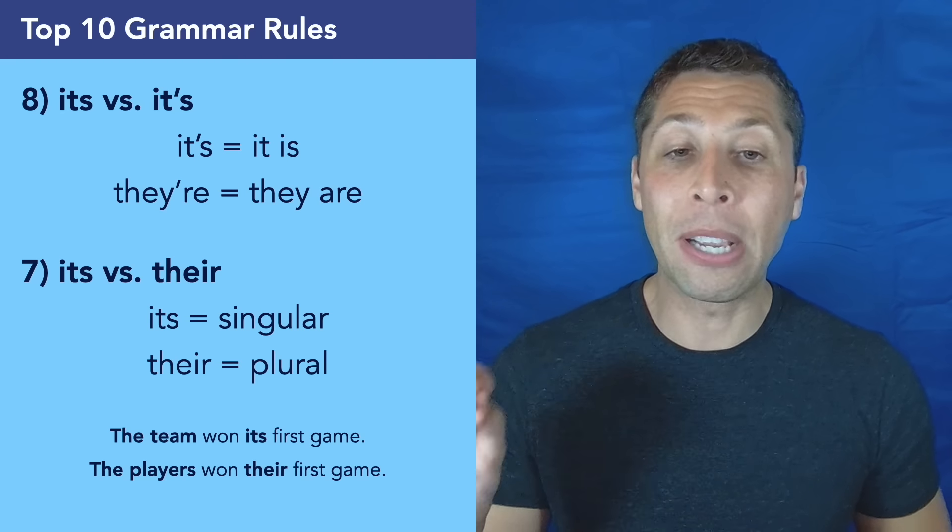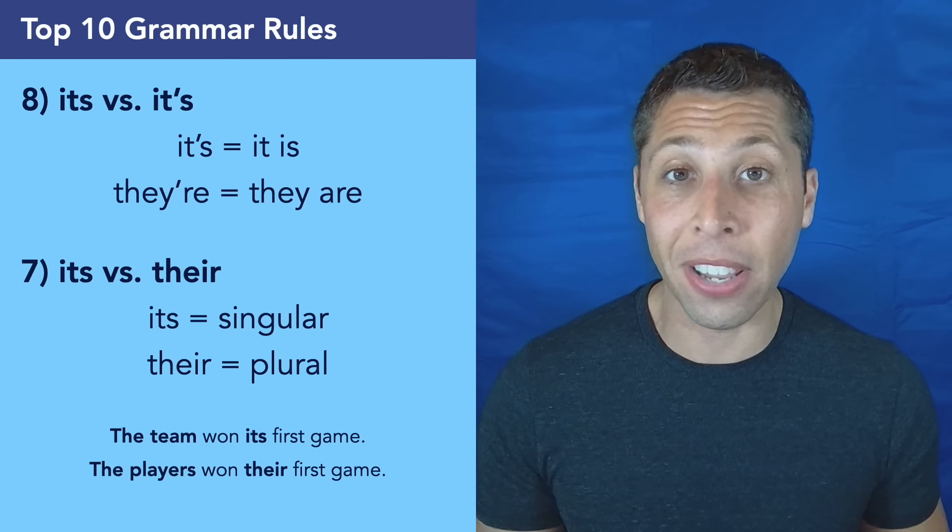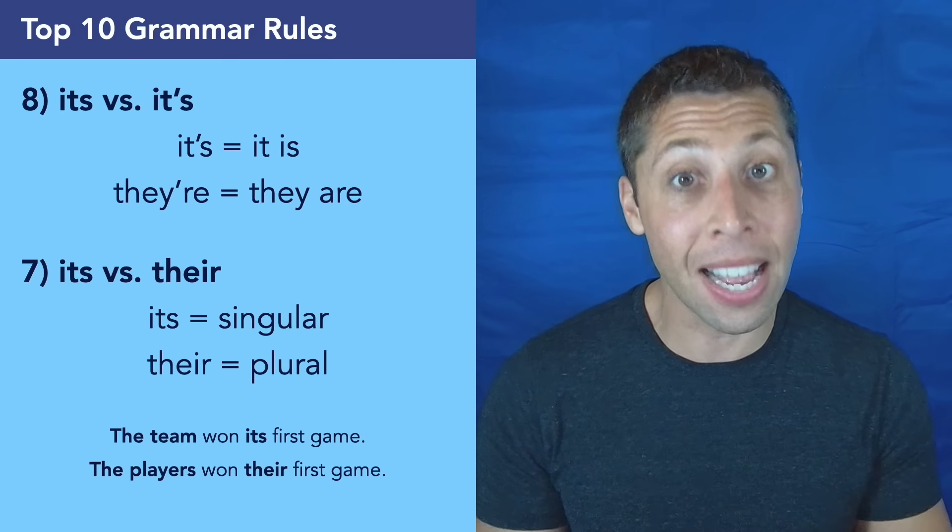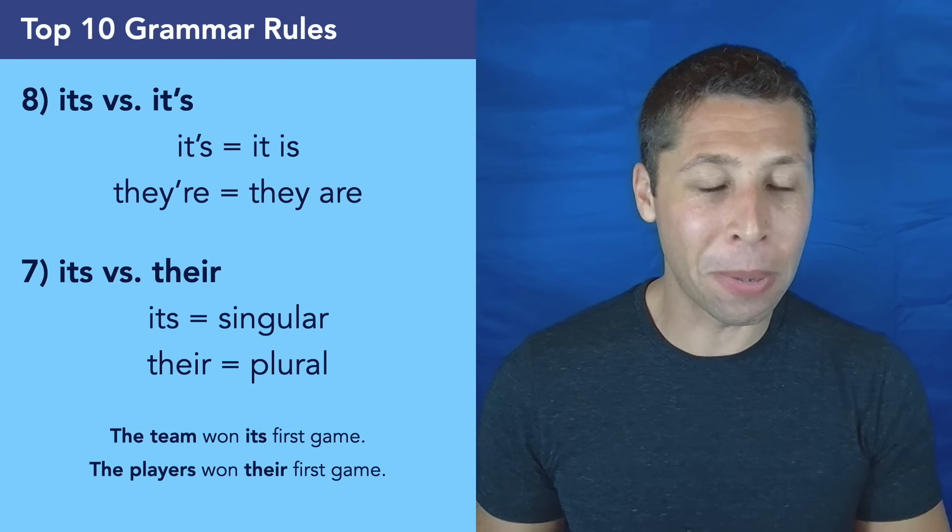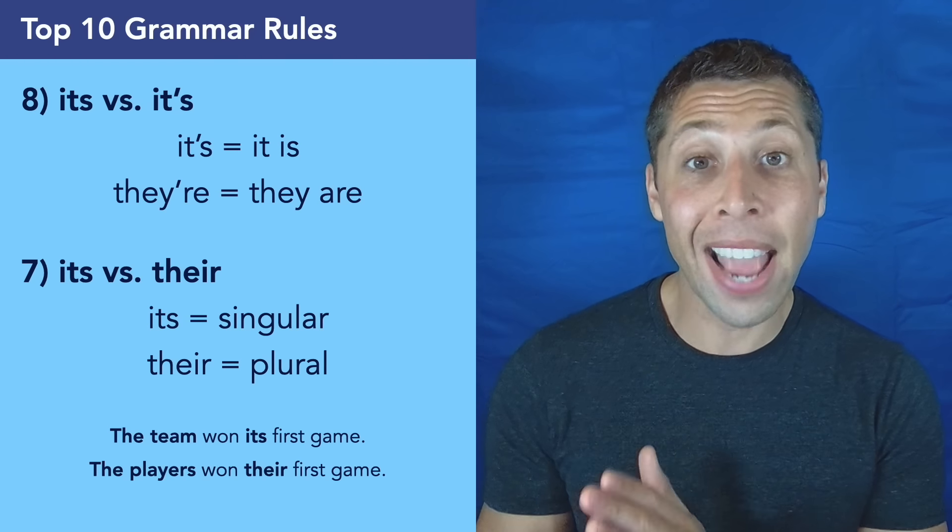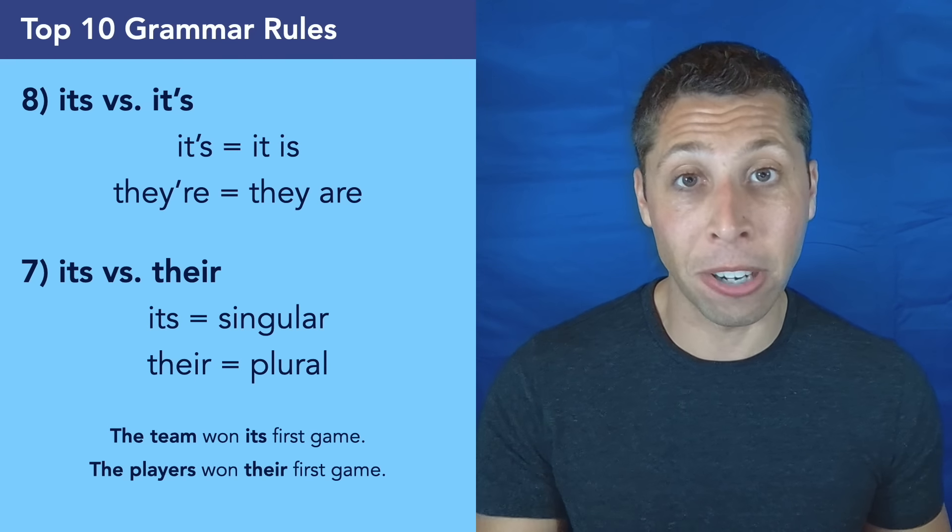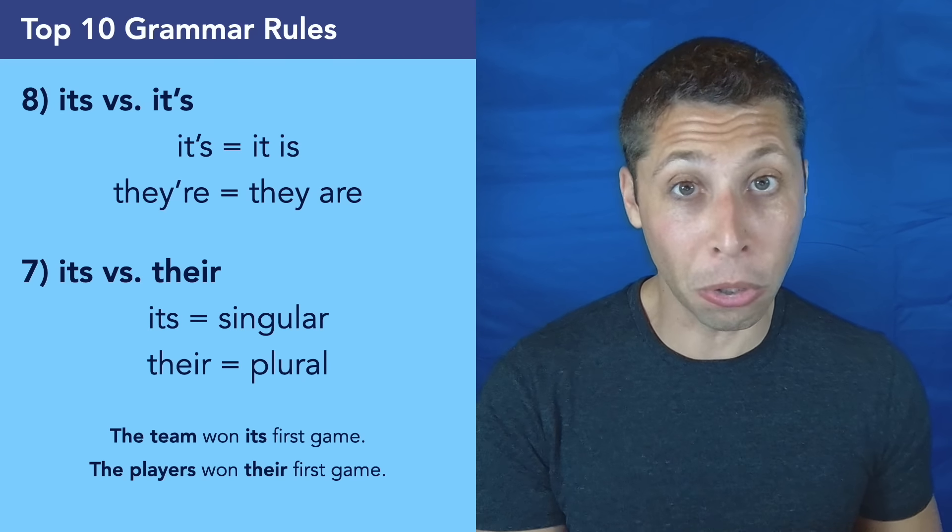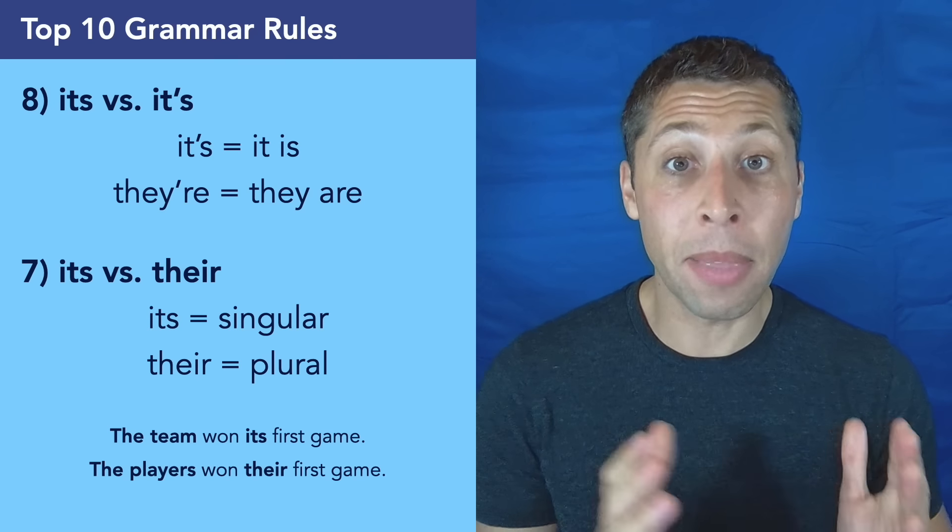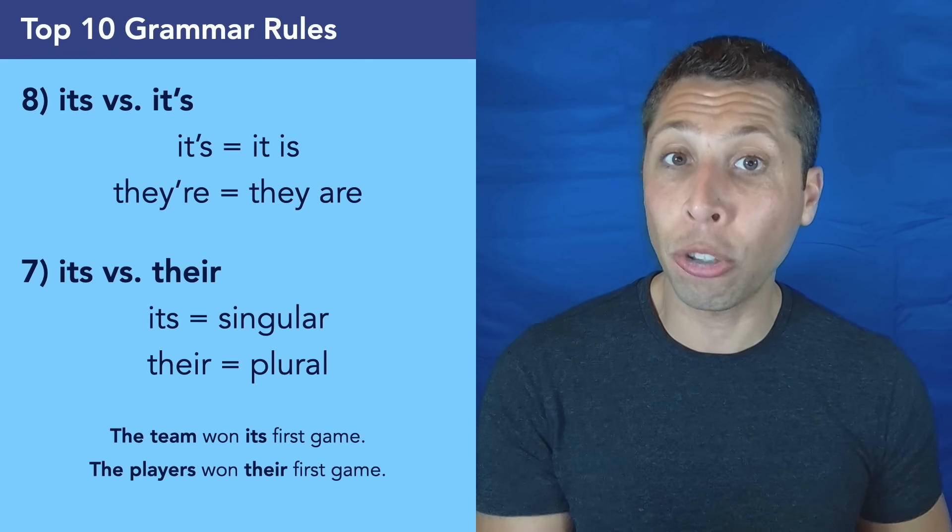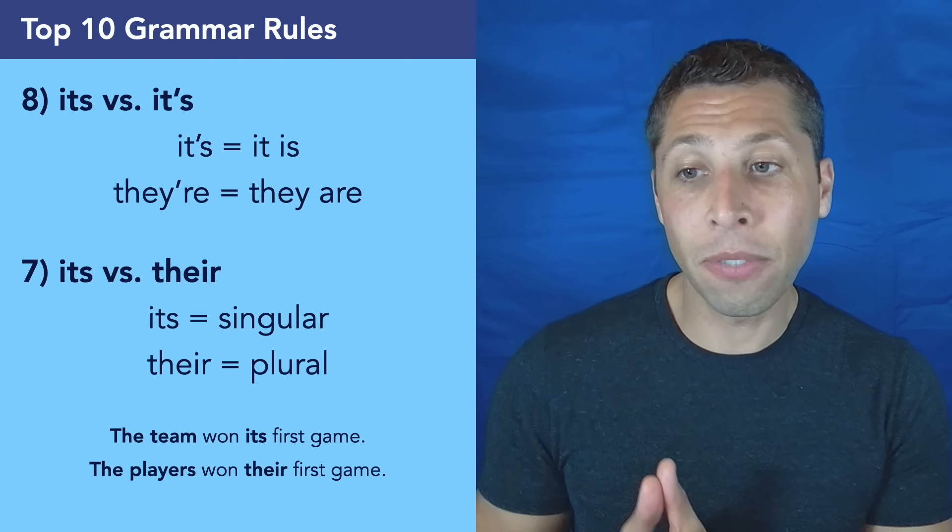What really matters is rule number seven, where we have to think about the other versions of the words its and their, the possessive pronouns. And even though they're possessive, they do not get apostrophes. English is weird. We'll talk more about apostrophes later. For now, just know that its without an apostrophe is the singular possessive pronoun and their is the plural possessive pronoun. So we need to think about whether or not the thing we're talking about is singular or plural and that can get tricky. So be careful.